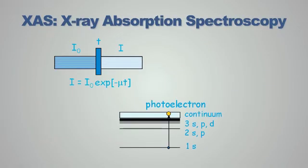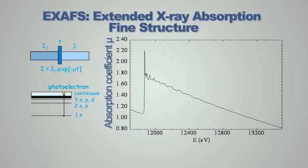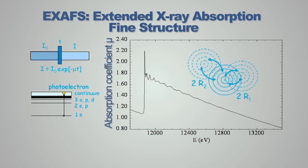X-ray absorption spectroscopy deals with the measurement of the absorption coefficient mu as a function of photon energy. Mu is a decreasing function of energy except for sudden jumps — the so-called absorption edges — which occur at specific values of the photon energy when the photon has sufficient energy to excite a core electron from an atom in the sample, with the creation of a photoelectron. EXAFS stands for Extended X-ray Absorption Fine Structure, and it refers to the oscillatory behavior of the absorption coefficient above an absorption edge.